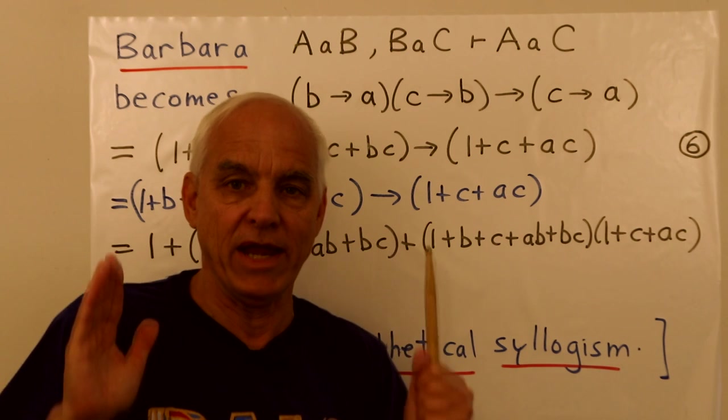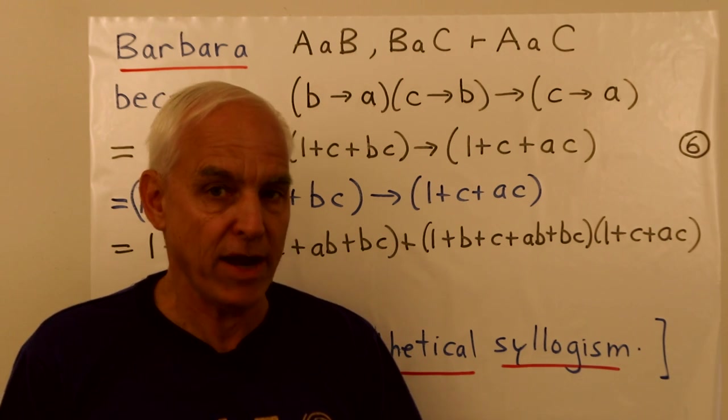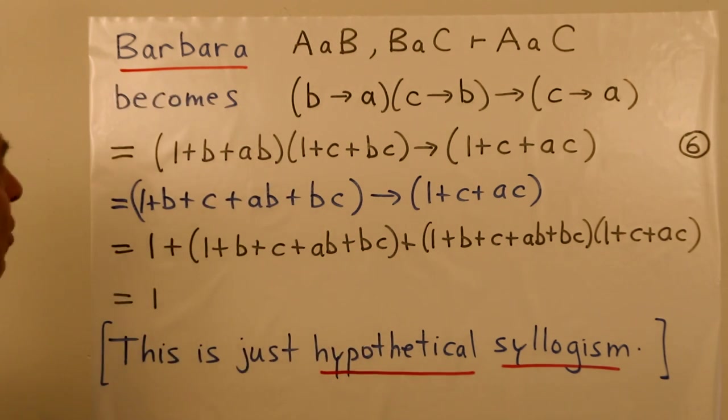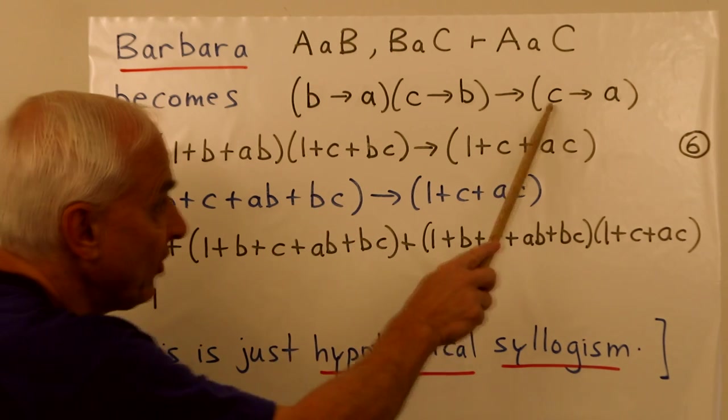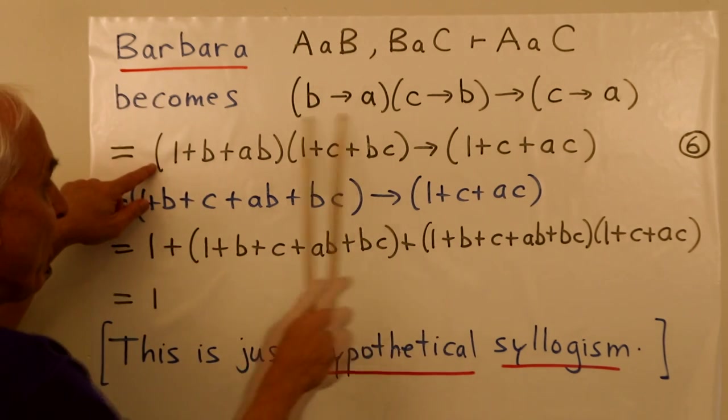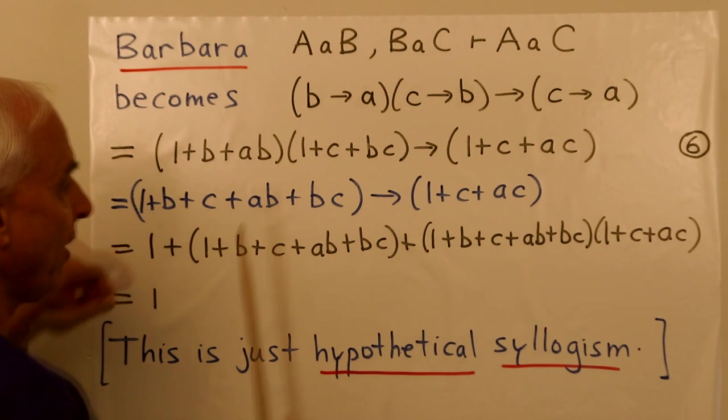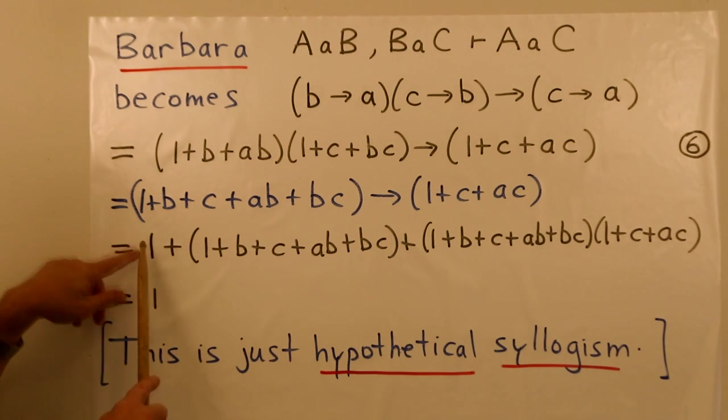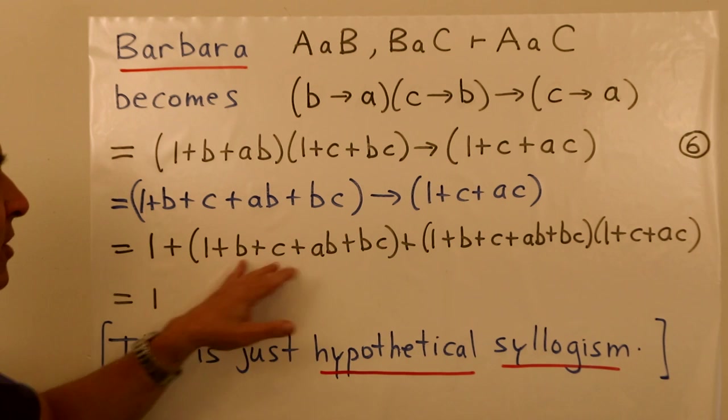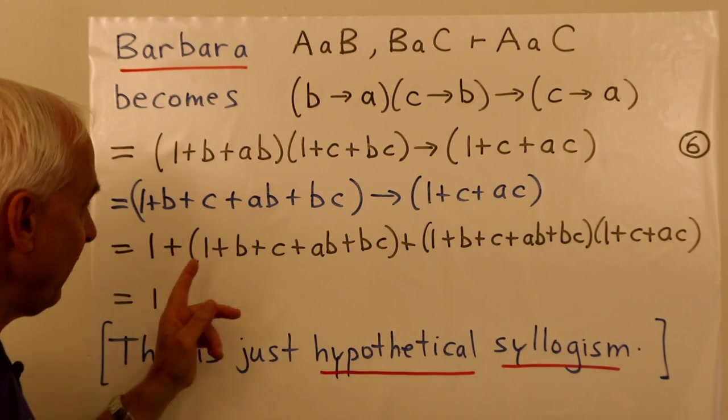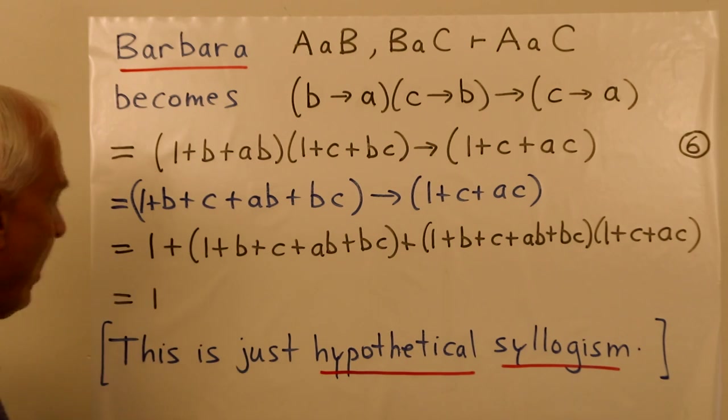So the evaluation means that we don't have to do anything clever. We're just doing something automatic. We can get our grade nine student friend to help us and do it for us. So we convert everything into the algebra of Boole. B implies A is one plus B plus AB. C implies B is one plus C plus BC. C implies A is one plus C plus AC. We simplify this thing here. We get one plus B plus C plus AB plus BC. So now it becomes all of this implies this. And then we know how this implication expands. It's one plus the first term plus the product of the first term and the second term. And then you multiply that out. In this case, it's convenient to observe that this term here cancels exactly with this times one. So it's actually much simpler than it looks. And you get one.